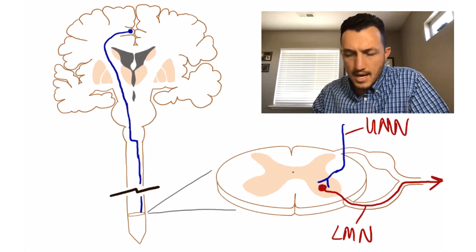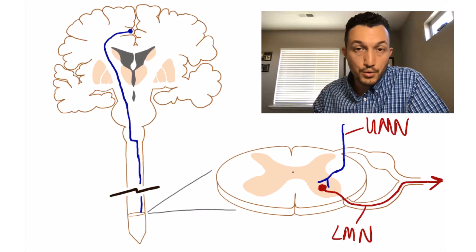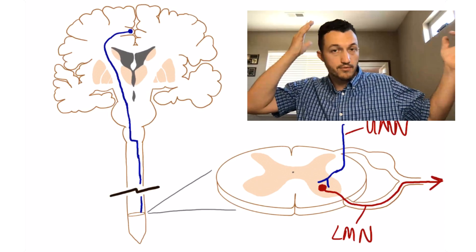I hope that helps. I would recommend you practicing drawing it out yourself this way so that you really get it down. So notice one side of the brain controls the extremity, the muscles for the extremities on the other side of the body. All right, I hope that was helpful.